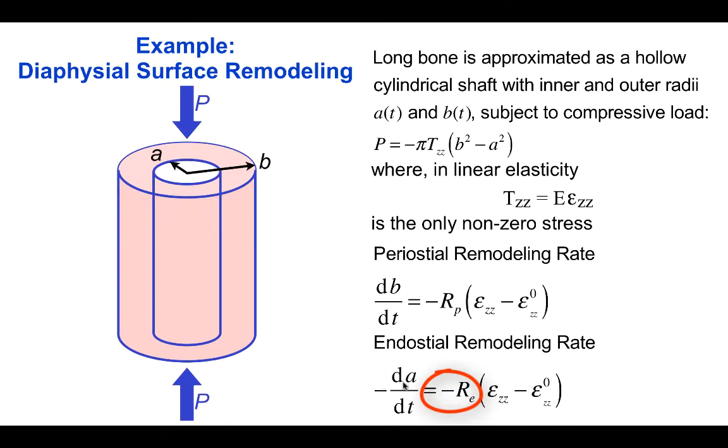Now, we have an additional minus sign because a decrease in the inner radius is similar to an increase in the outer radius in that it gives rise to an increase in the cross-sectional area.